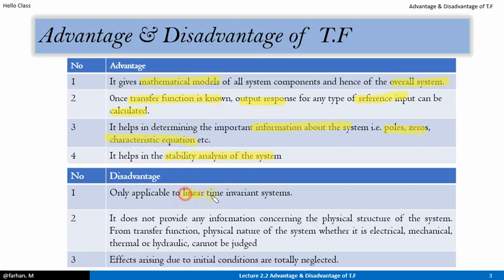The disadvantages of transfer function: first, it is only applicable to linear time invariant systems. Second, it does not provide any information concerning the physical structure of the system — whether it is electrical, mechanical, thermal, or hydraulic — cannot be judged from the transfer function. Third, effects arising due to initial conditions are totally neglected, as initial conditions are assumed zero in the transfer function definition.